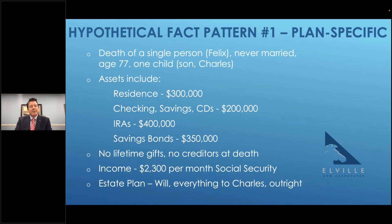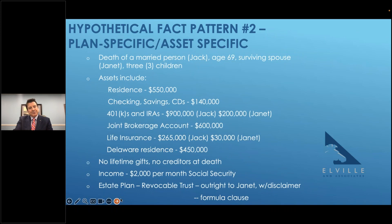What if there was no beneficiary designation on the IRA? That would be very unfortunate because it would go through probate. The other issue worth noting: Felix had quite a bit of savings bonds. These savings bonds are IRD — income in respect of a decedent — similar to IRAs and traditional IRA income in that tax is going to be due on these. We have to take control of the savings bonds, understand the tax that's likely due, and figure out how to allocate that income tax.